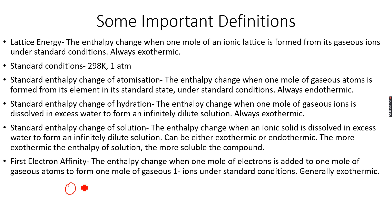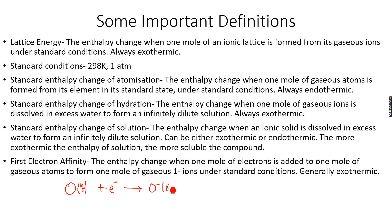For example, if we have O gas — one mole of gaseous atoms — and we add one mole of electrons (written as e⁻ to represent electrons) to get one mole of gaseous one-negative ions, then this enthalpy change is called the first electron affinity. It is generally exothermic.